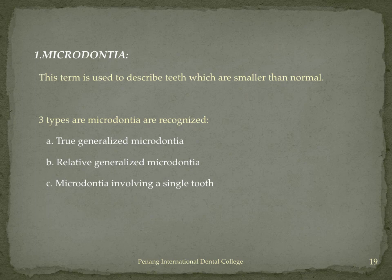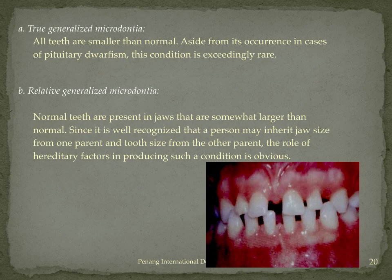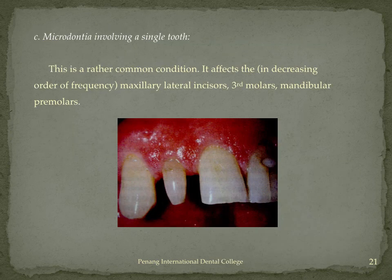Microdontia is broadly of three types: true generalized, relative generalized, or microdontia involving a single tooth only. True generalized microdontia is where all teeth are small, attributed to hormonal disturbances like pituitary dwarfism, and is extremely rare. Relative generalized microdontia means the teeth are not actually small but appear small relatively because of a larger jaw size. Microdontia involving a single tooth is the most common, occurring most frequently in the maxillary lateral incisor, followed by third molars and mandibular premolars.